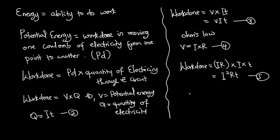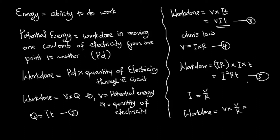Also from Ohm's law, making current the subject gives I = V/R. Substituting that into W = VIt, the current becomes V/R, so work done becomes W = V × (V/R) × t, which simplifies to W = V²t/R. This is equation six.